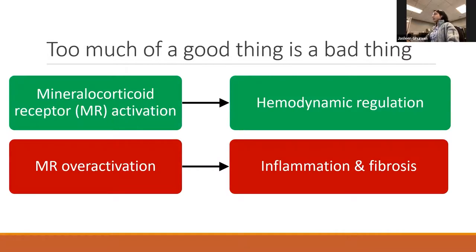But too much of a good thing can be a bad thing. Stimuli for aldosterone release include angiotensin 2, low sodium, and high potassium levels in the plasma. They activate mineralocorticoid receptors and assist in hemodynamic regulation by playing a role in electrolyte homeostasis and fluid balance. However, overactivation of mineralocorticoids, or chronically elevated levels of aldosterone, are associated with vascular, kidney, and myocardial fibrosis, which eventually can cause end-organ dysfunction and failure.